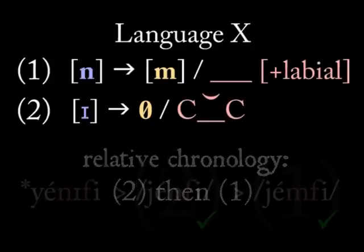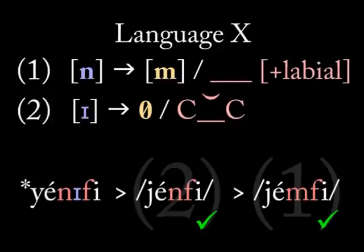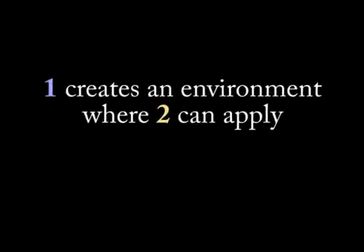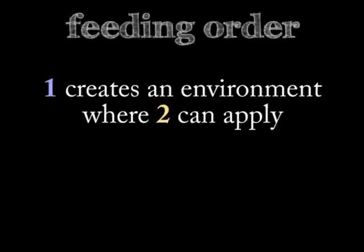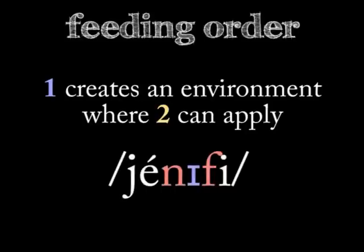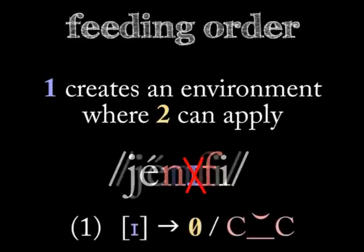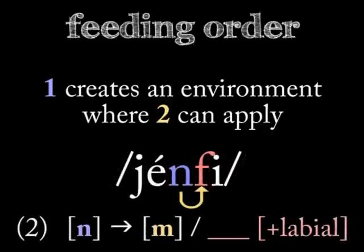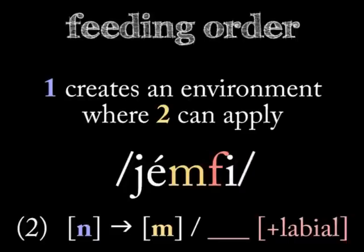This fictitious but credible example from language X raises awareness about not only the timeline of rules, but the order of those rules. When an earlier rule creates an environment in which a later rule can operate, the two rules are said to have a feeding order. The earlier rule feeds into the second one. In language X, rule one — which deleted I — allowed rule two — which changed N to M — to apply. That's an example of a feeding direction.